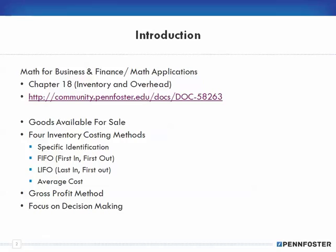For this series of videos and for this chapter, I'm going to talk about cost of goods available for sale, the four inventory costing methods, the gross profit method, and then of course the focus on decision-making.